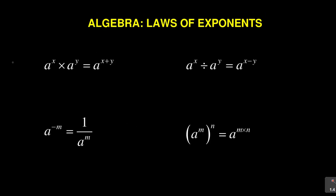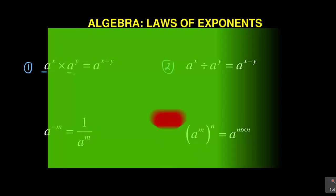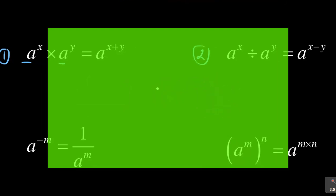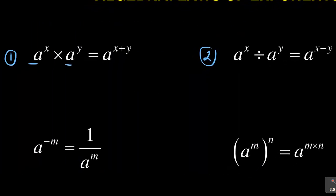When we look at the first two laws provided here, we've got the first law and the second law. What I want you to notice is the signs. You've got the first with a base of A — A to the exponent X times A to the exponent Y. The second law similarly also has A to the exponent X and A to the exponent Y. The only difference is the first law is multiplying and the second law is dividing. So when you're multiplying, remember you add. And when you're dividing, remember you subtract.